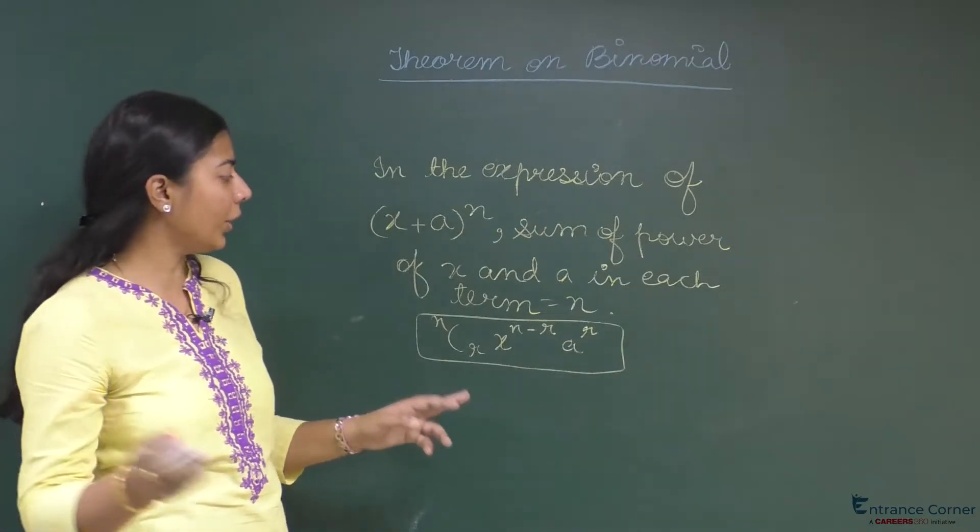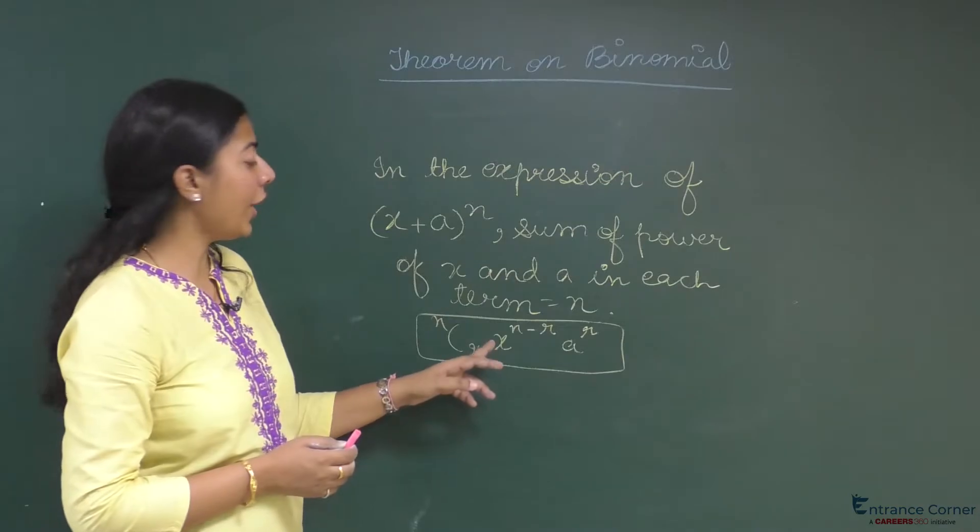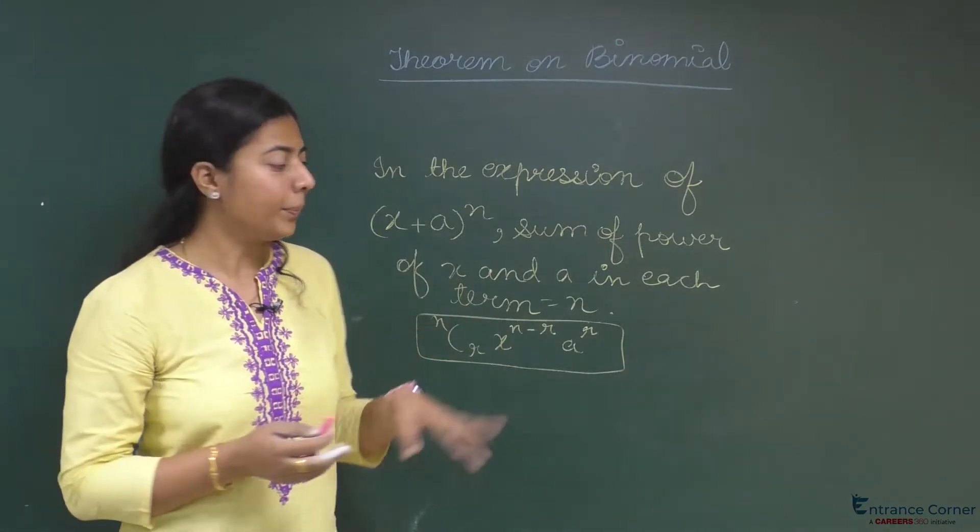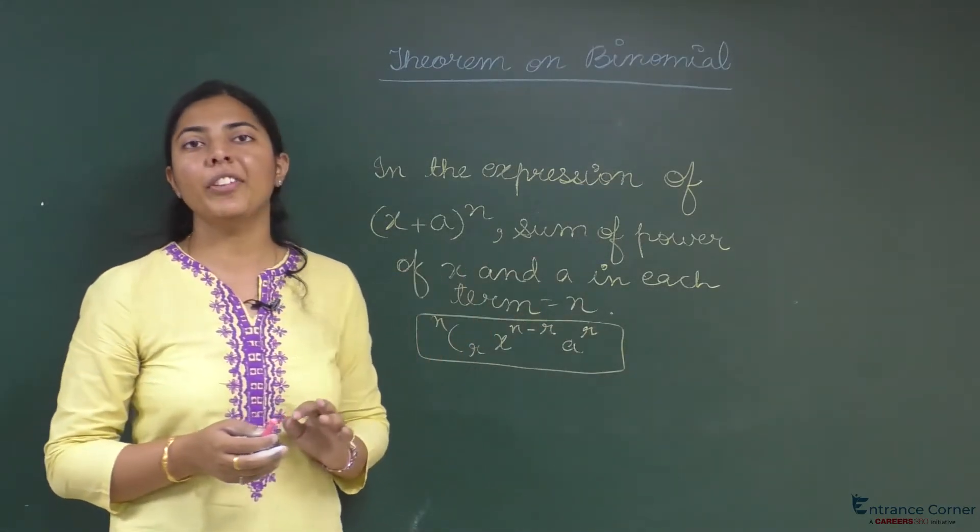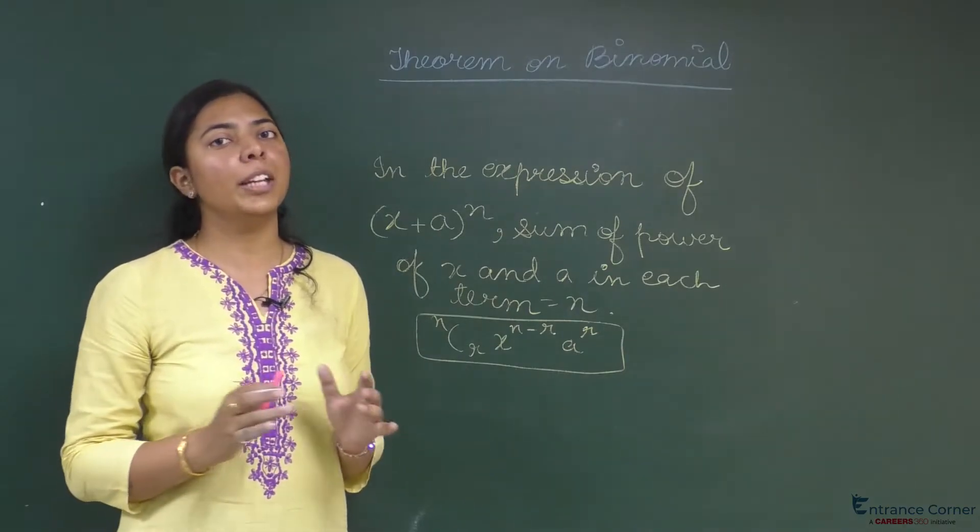0, 1, 2, 3 and so on, up till n it can hold the values. x to the power n minus r multiplied by a to the power r. Any term will be of this form.